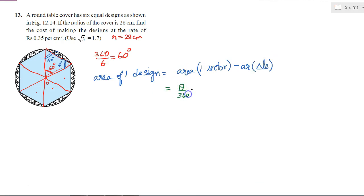theta by 360 into π r². And area of this triangle, what will that be? Since this is an equilateral triangle, so I know that the area of an equilateral triangle is equal to √3 by 4 into a², if a is the side of the triangle.